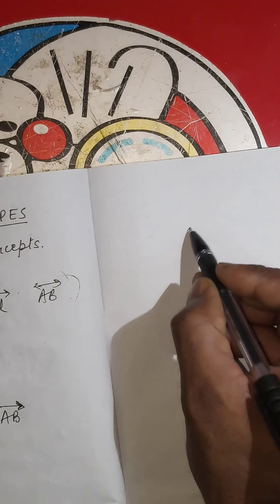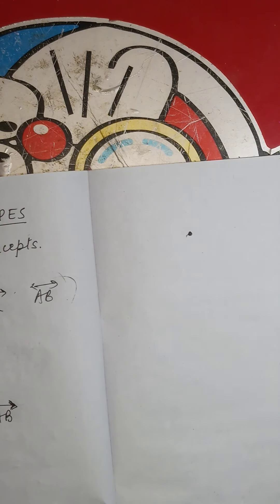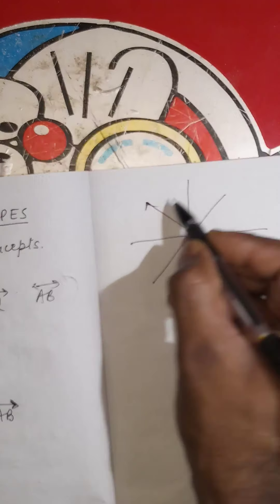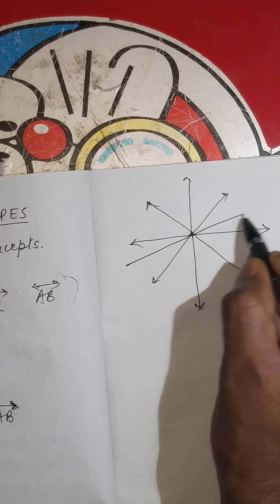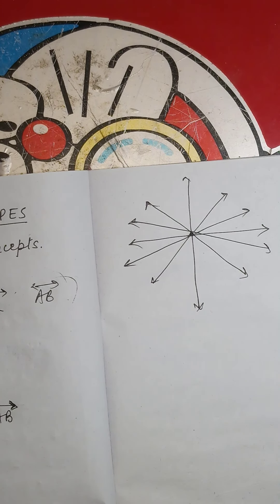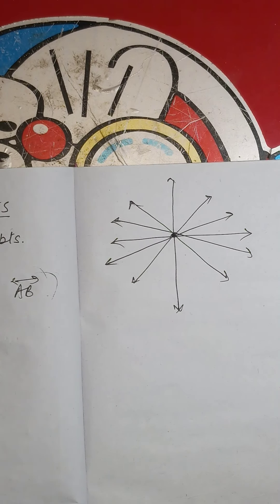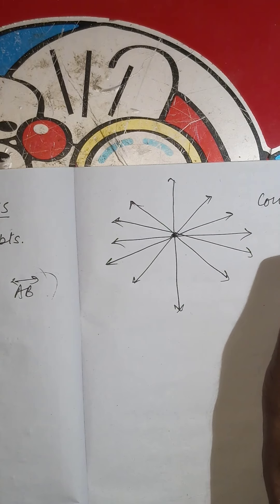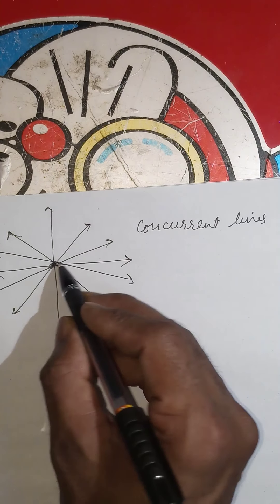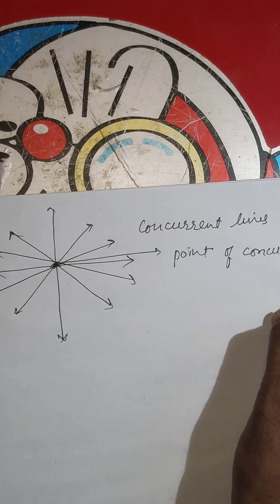Now some basic properties of lines and points in a plane. If we have a point, an infinite number of lines can be drawn passing through a given point. These lines passing through a single point are called concurrent lines, and that point is known as the point of concurrence.